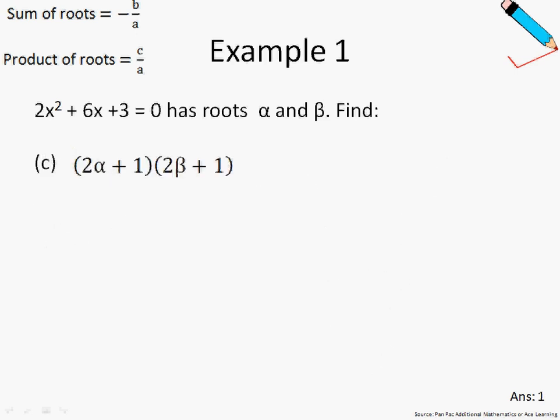Moving on to our last example, we're using a similar quadratic equation. So therefore, let me just write out the sum and product of roots. So the sum of roots is -3, and the product of roots is 3/2. If you're still unsure how to get the sum and product of roots, I'm just using the formulas on the top left-hand corner of the screen. Alternatively, you can move back to example 1a, which will show you in greater detail how to get the sum and product of roots.